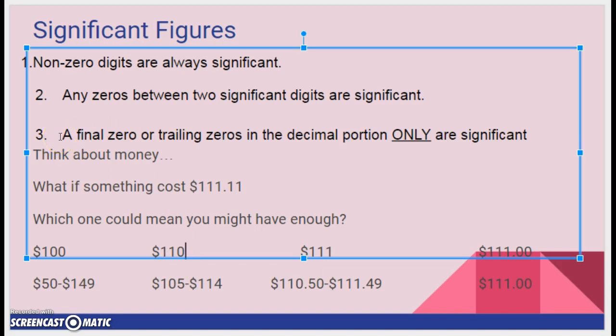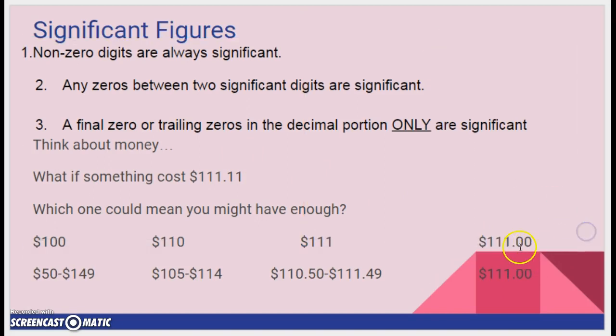A final zero or trailing zeros in the decimal portion only are significant. Now down here, I have some zeros, but that's telling me I have exactly no pennies. Okay, I have exactly no pennies.